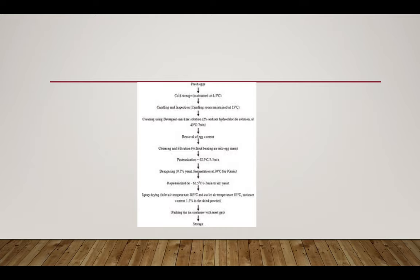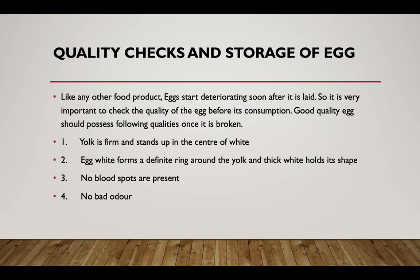Here is a flow line showing the egg drying process. Regarding quality checks and storage of eggs — like other food products, eggs start deteriorating soon after they are laid, so it is very important to check quality before consumption. Good quality eggs should possess the following qualities when broken: the yolk is firm and stands up in the center of the white; the egg white forms a definite ring around the yolk and thick white holds its shape; no blood spots are present and no bad odor.